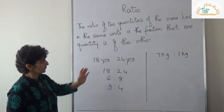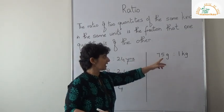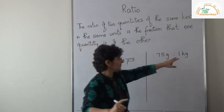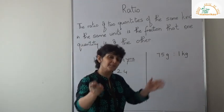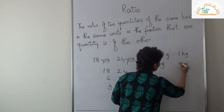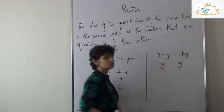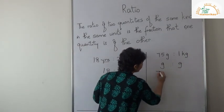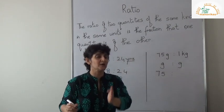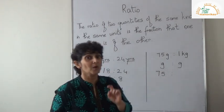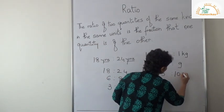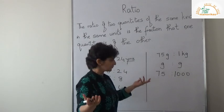Now for 75 grams is to 1 kg: the units are different, so let's make them the same. 1 kg is 1000 grams. So my ratio becomes 75 is to 1000.